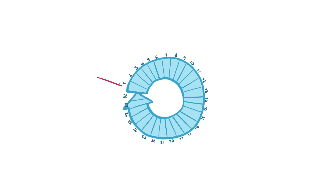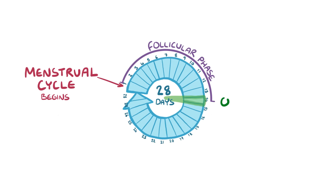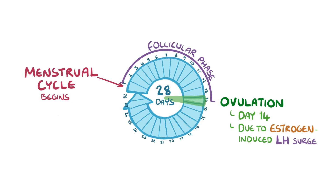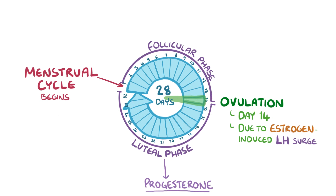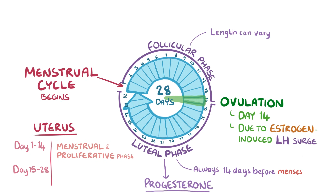As a quick recap: the menstrual cycle begins on the first day of menstruation. For an average 28-day cycle, the changes in the ovary during the first 14 days are called the follicular phase. Ovulation usually occurs at day 14 as a result of the estrogen-induced surge in LH. The last 14 days are the luteal phase, during which progesterone becomes the dominant hormone. While the length of the follicular phase can vary, the luteal phase almost always precedes the onset of menses by 14 days. The uterus also goes through changes: during the first 14 days the endometrium undergoes the menstrual and proliferative phases, and during the last 14 days it undergoes the secretory phase.